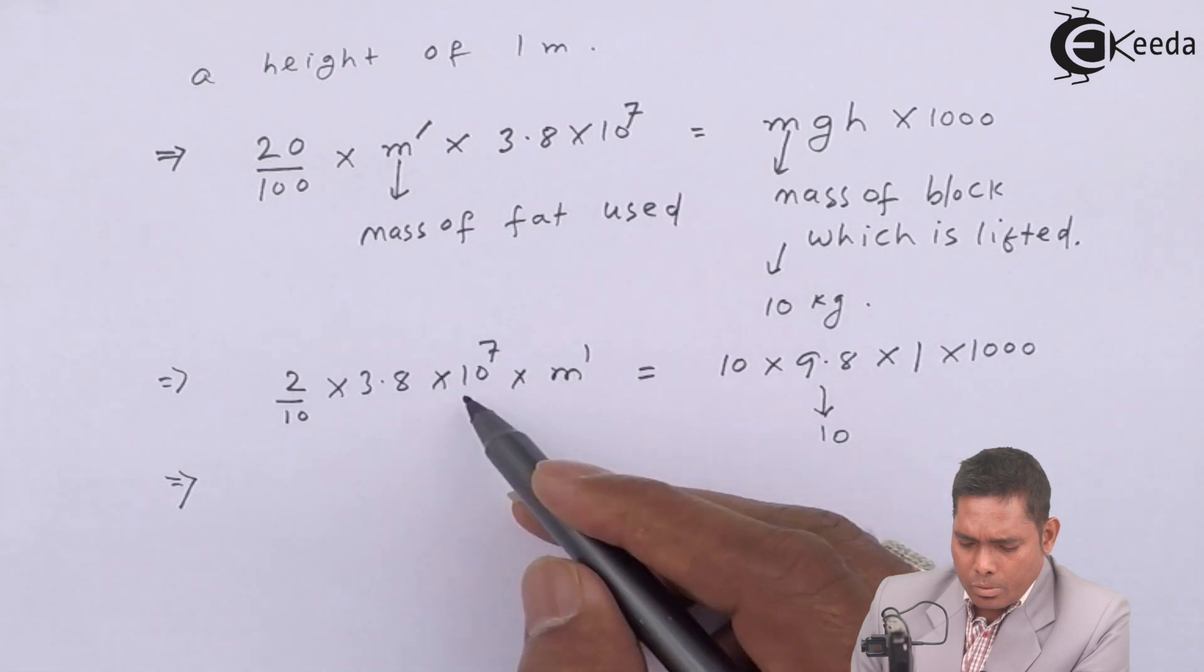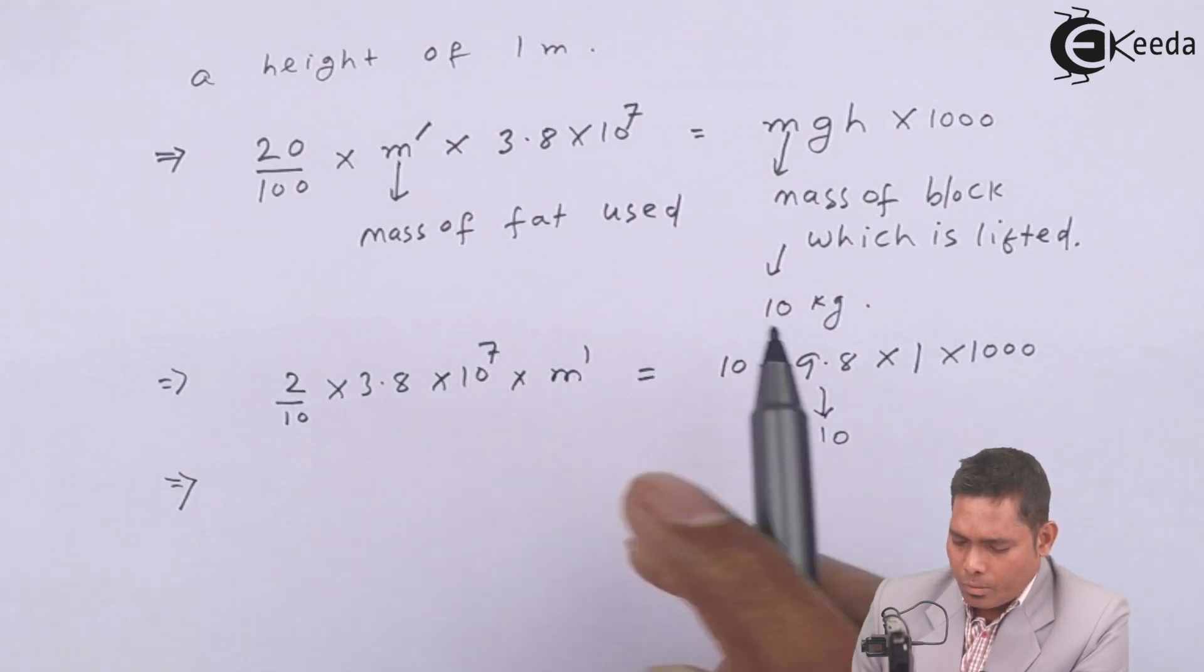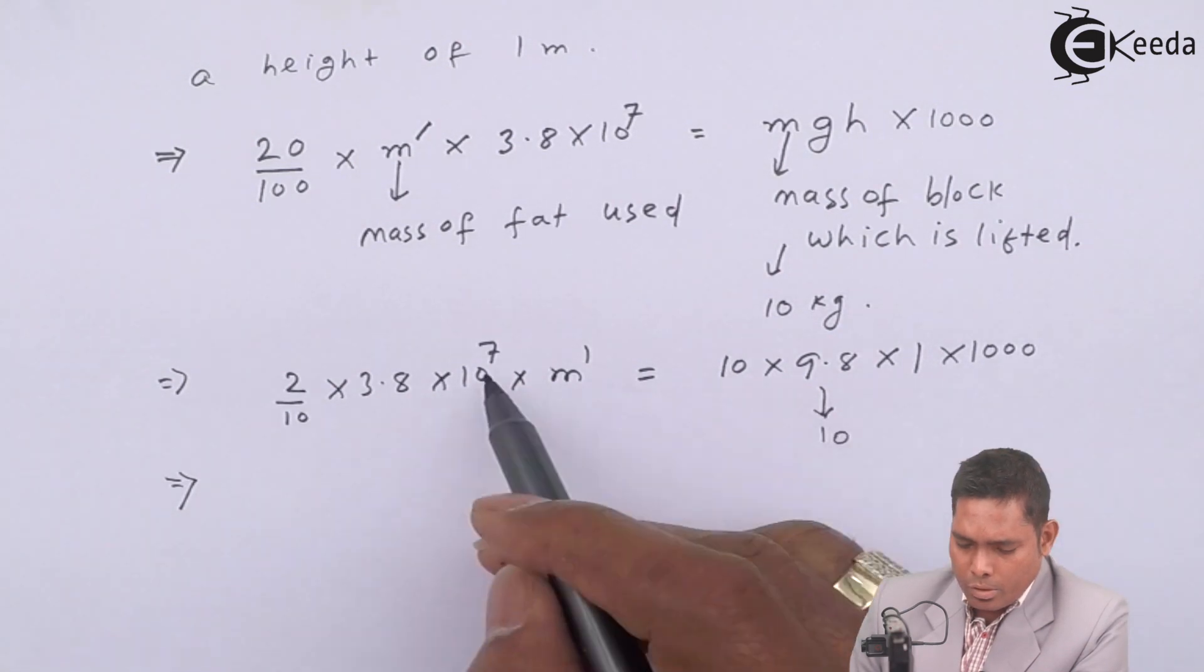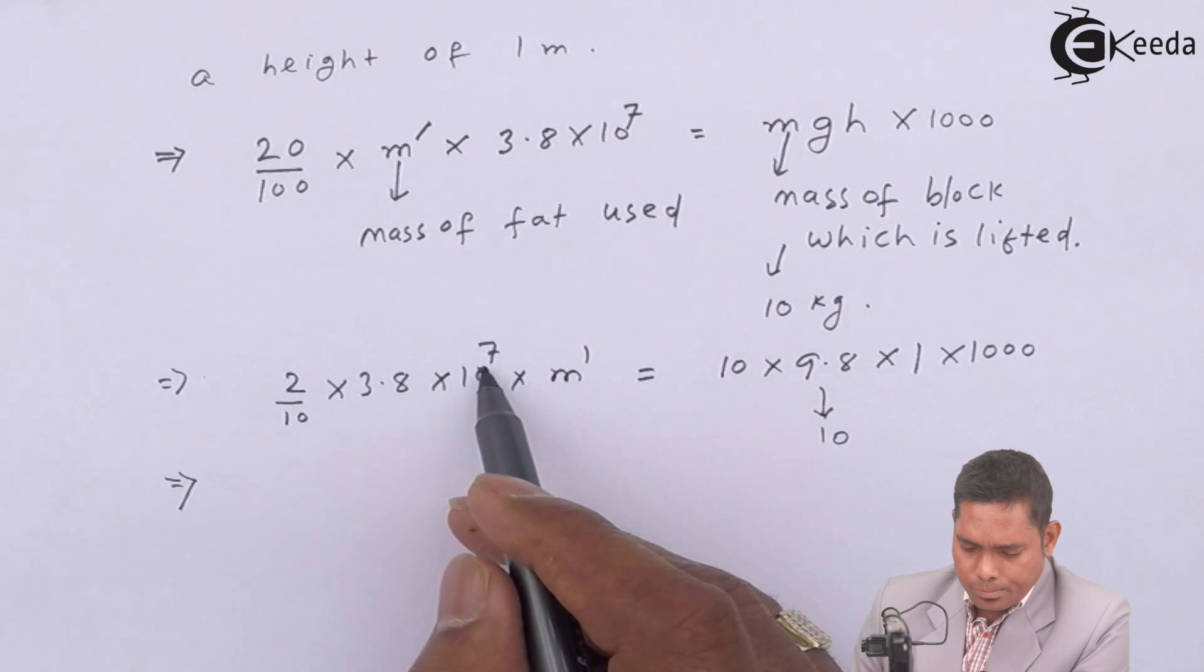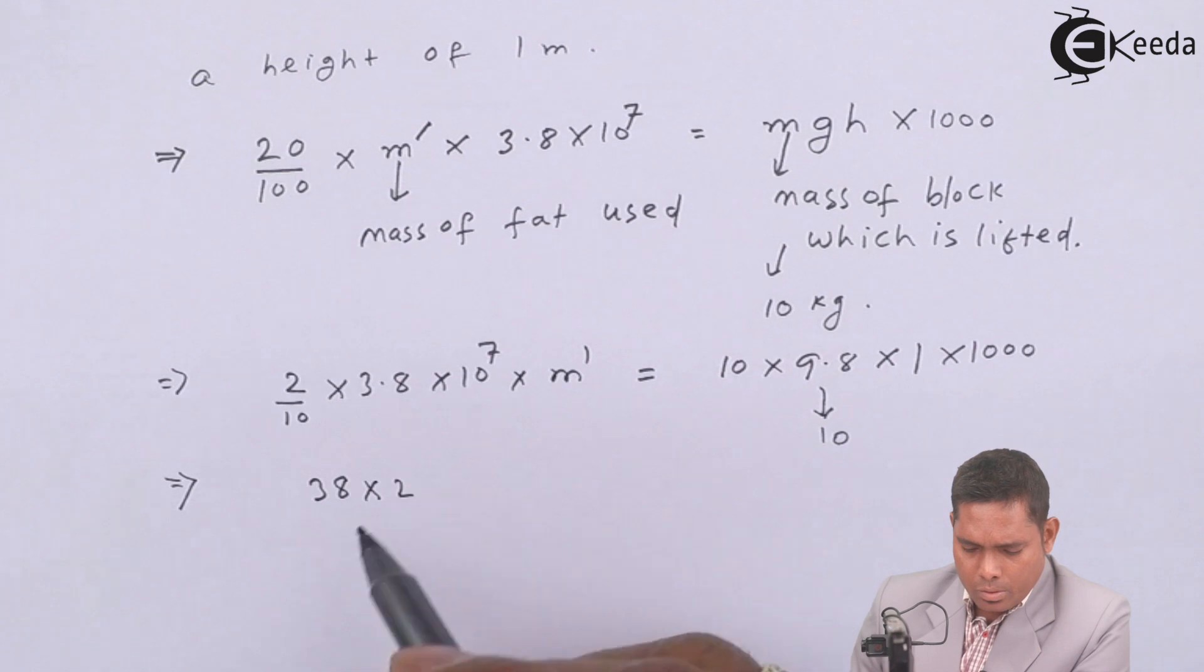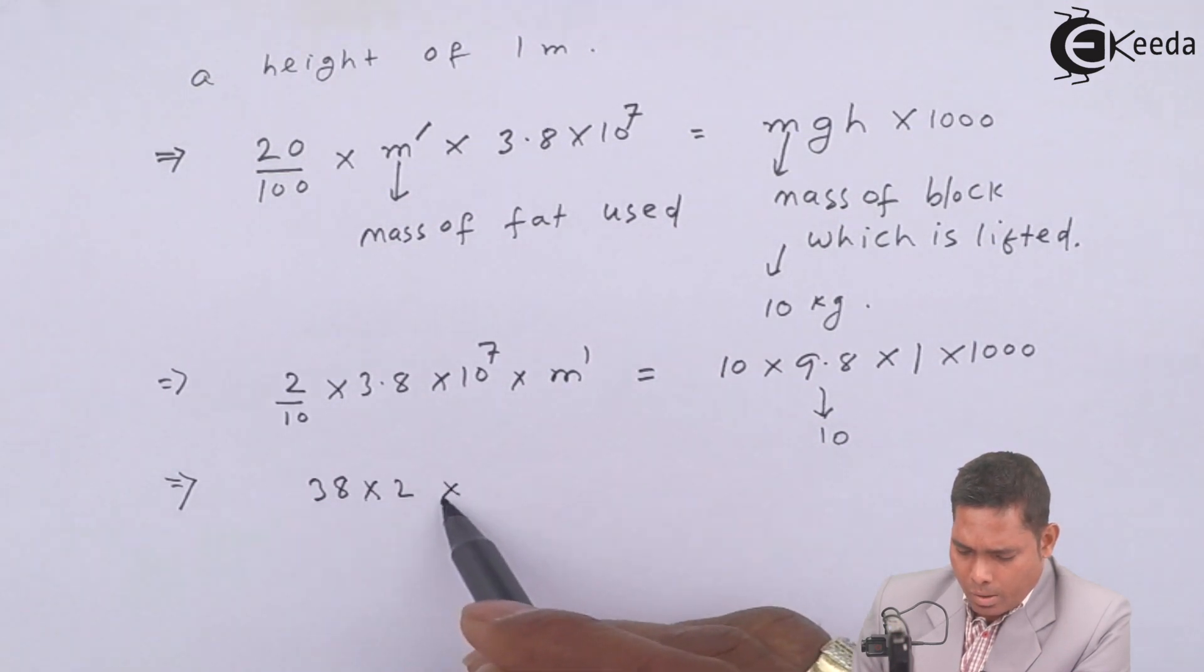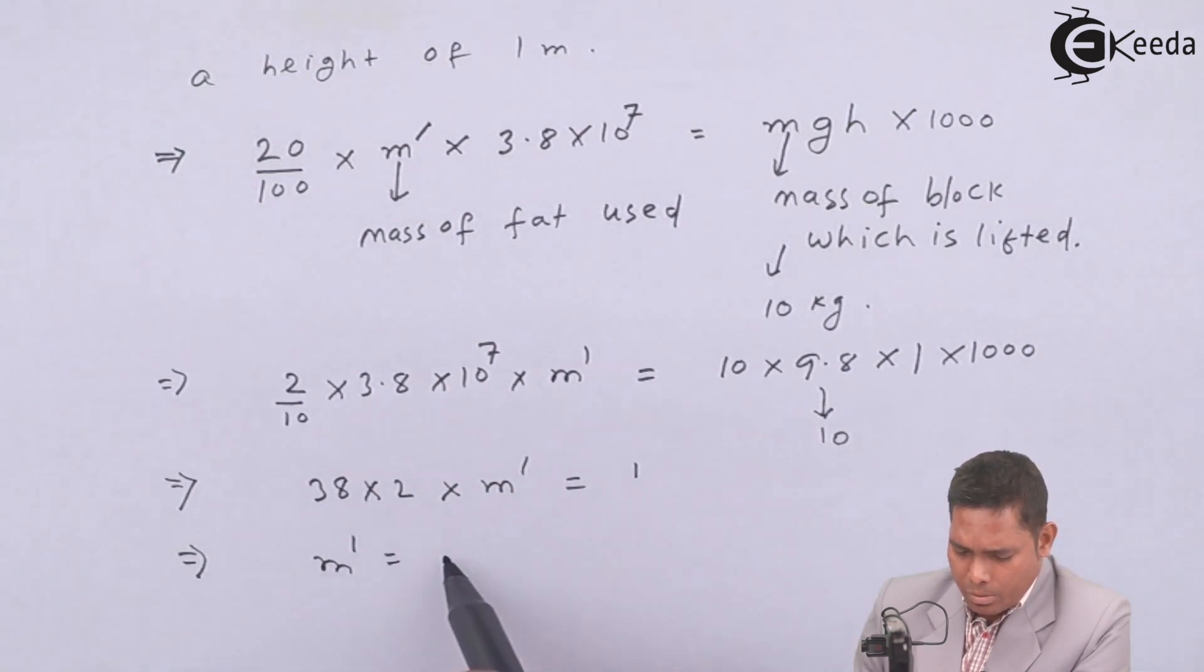So 2 here. So it is 38 into 2 into m dash equals to 1. So from here, this is how you simplify the calculation. And then you are getting m dash equals to 1 by 76.